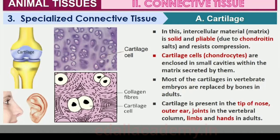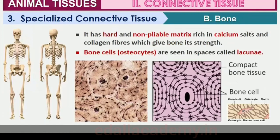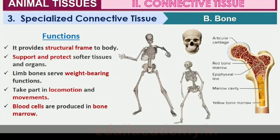Bones have a hard and non-pliable ground substance rich in calcium salts and collagen fibers which give bone its strength. It is the main tissue that provides structural frame to the body. Bones support and protect softer tissues and organs. The bone cells, osteocytes, are present in spaces called lacunae. Limb bones, such as the long bones of the legs, serve weight-bearing functions and also interact with skeletal muscles attached to them to bring about movements.